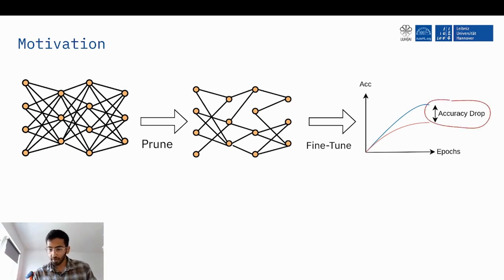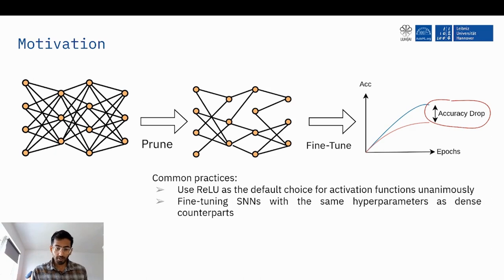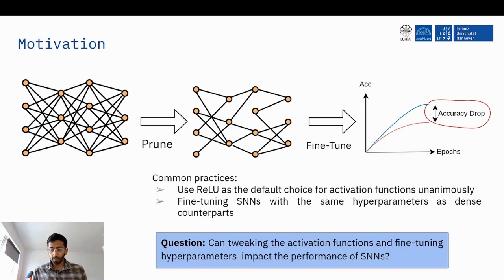What we want to minimize is this accuracy drop. But what we noticed was that most of the time this whole process uses the same default choice of activation functions, which is relu, and also the fine-tuning utilizes the same hyperparameters as the dense counterparts. So we decided to tune them in an automated manner to see if we can juice more out of these networks.